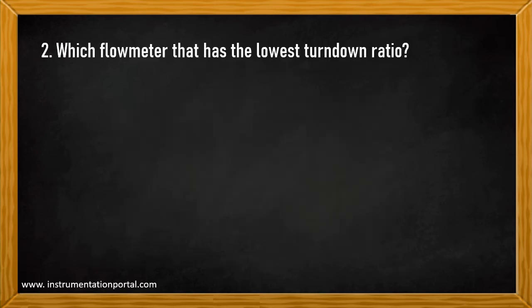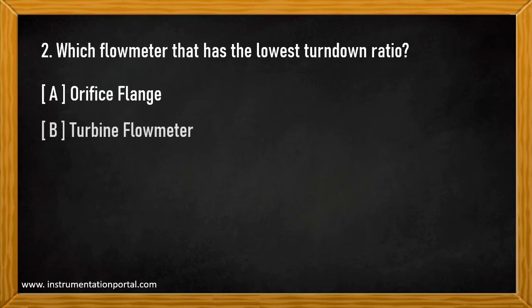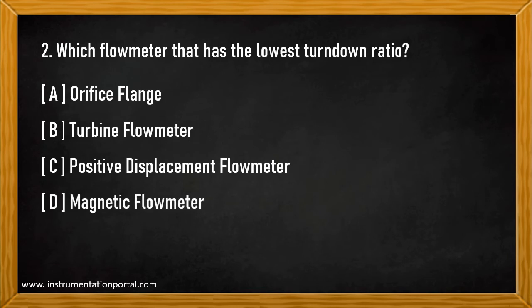Question number two: Which flow meter has the lowest turndown ratio? A. Orifice flange. B. Turbine flow meter. C. Positive displacement flow meter. D. Magnetic flow meter.